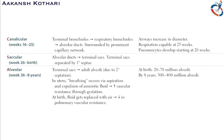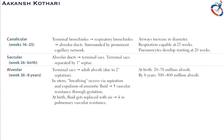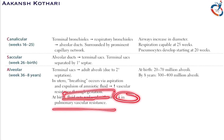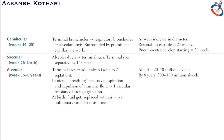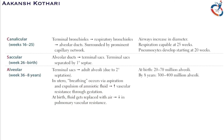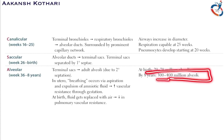In utero, fetal breathing occurs by aspiration and expulsion of amniotic fluid, causing increased pulmonary vascular resistance during gestation. At birth, the fluid is replaced with air, causing a decrease in pulmonary vascular resistance. At birth there are approximately 17–20 million alveoli, increasing to approximately 300–400 million by eight years of age.